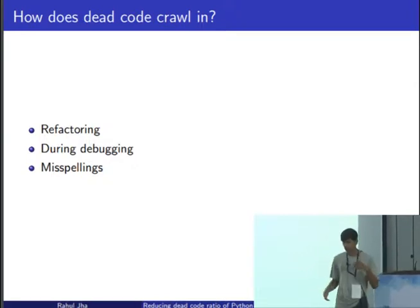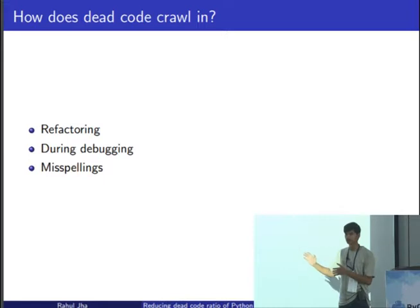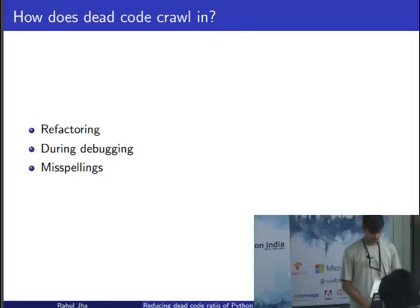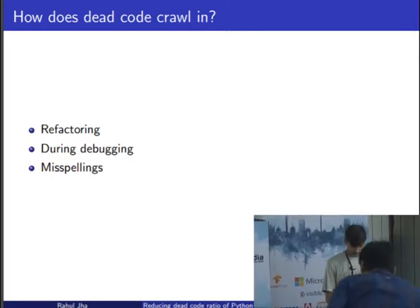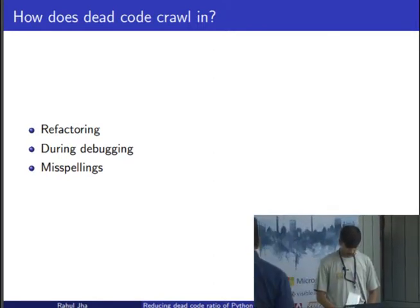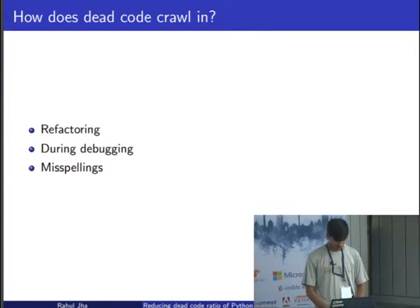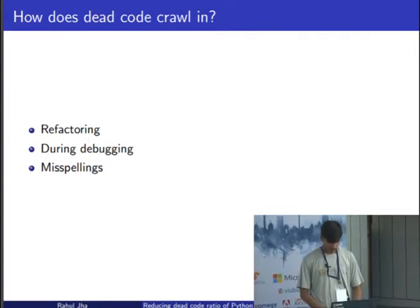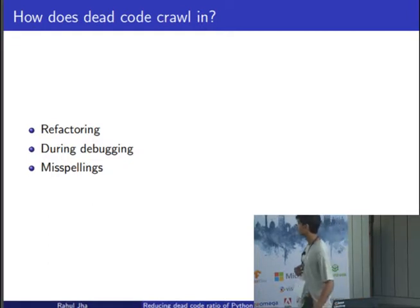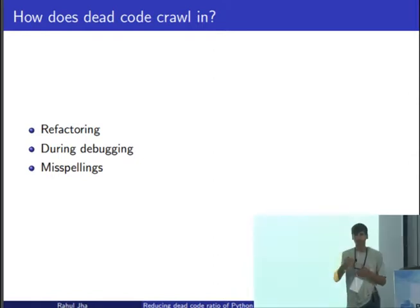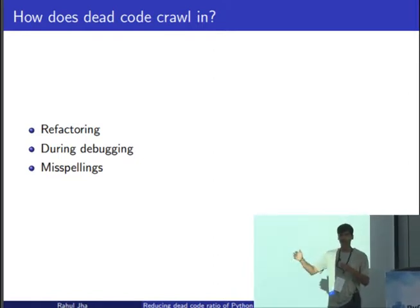Talking in very conventional terms, suppose we have three functions — let's say A, B, and C. A did something, B did something, and C called both A and B.